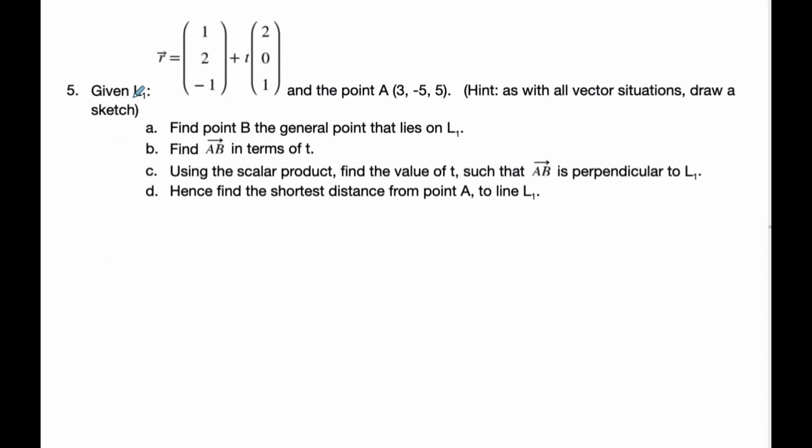Alright, so we're given line L1 with this equation and point A. I have a line and somewhere I have point A. This is the vector equation R, and I want to find point B, the general point that lies on L1.